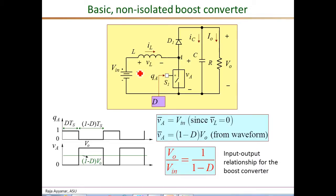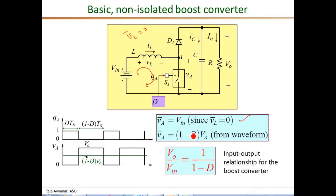Using KVL and the steady-state condition that the cycle-average inductor voltage VL is zero, the average of VA equals VN. From the waveform, VA average is (1−D)·VO, since VA is finite only during the off interval. Therefore, (1−D)·VO = VN, giving the input-output relationship: VO/VN = 1/(1−D). Since D ranges between 0 and 1, this is always a step-up converter.